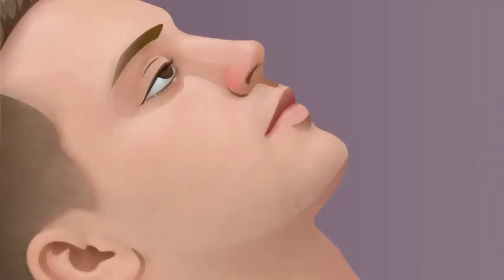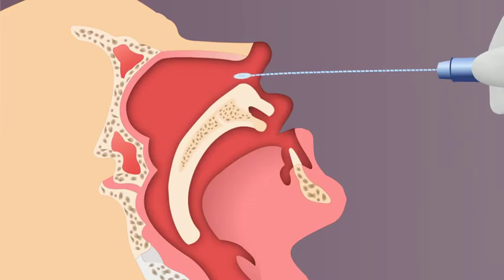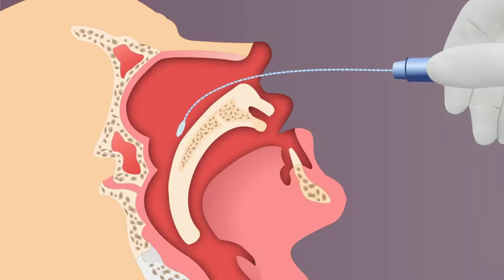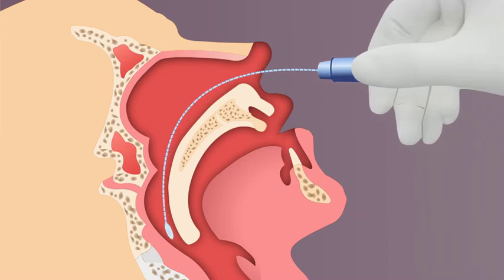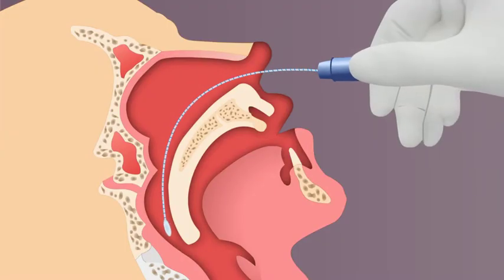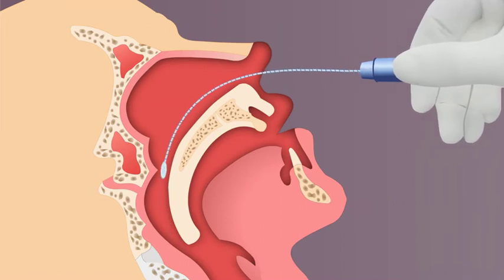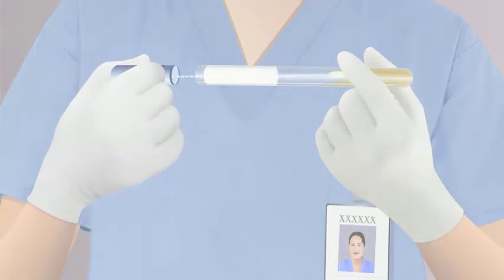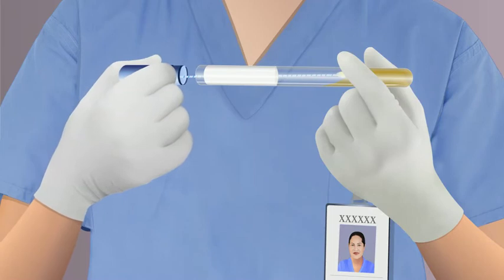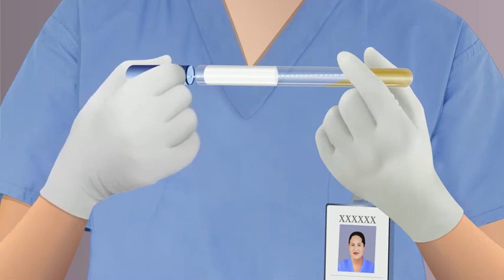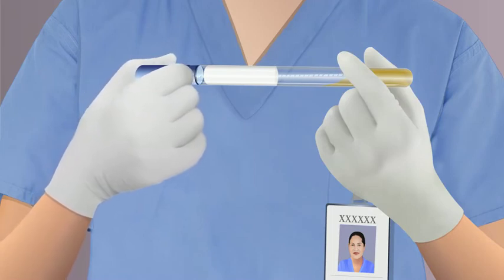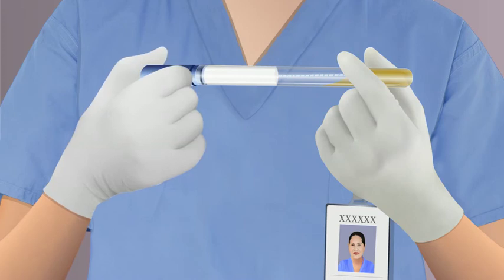Gently advance the swab to the nasopharynx until resistance is met. Roll the swab and allow it to remain in place for several seconds. Insert the swab into the culture tube and push the tip into the liquid medium at the bottom of the tube. Secure the top of the culture tube.